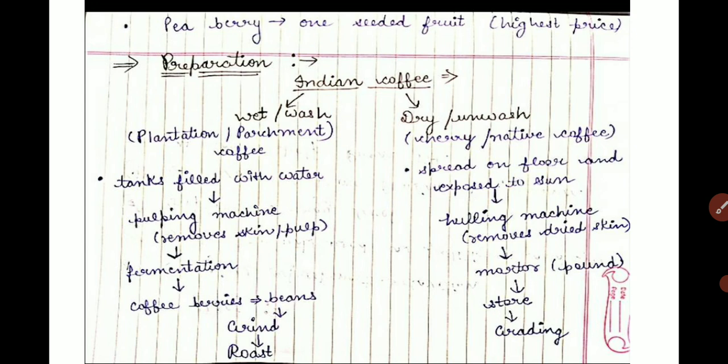For the wet or wash method: coffee berries are put in big tanks of water, then passed through a pulping machine to remove the outer cover. Fermentation follows, after which the coffee berries — now called beans — are converted, ground, and roasted. Coffee prepared from plantation coffee uses this wet wash method.